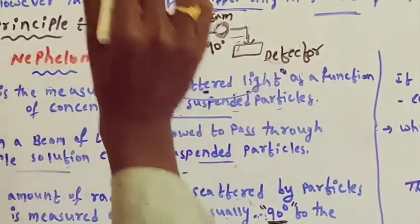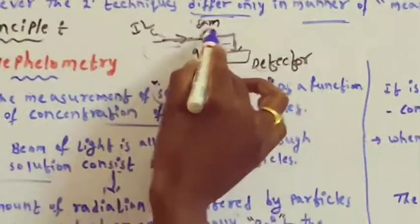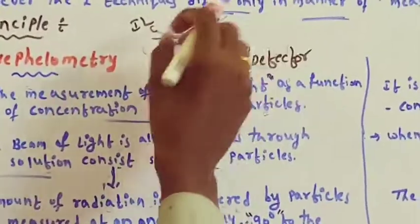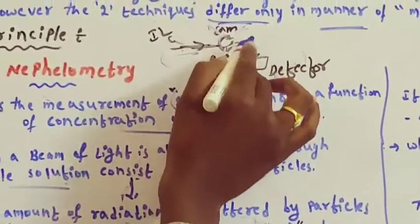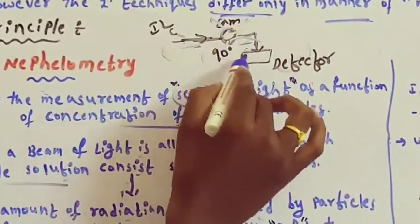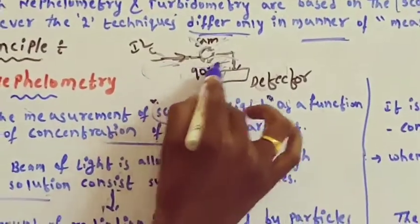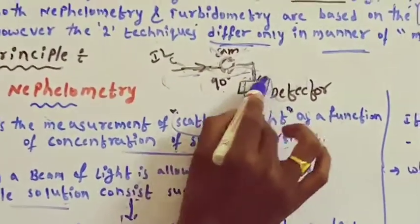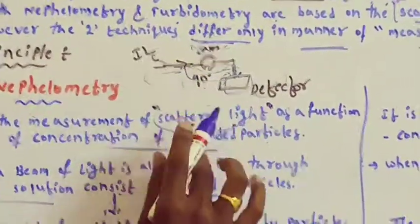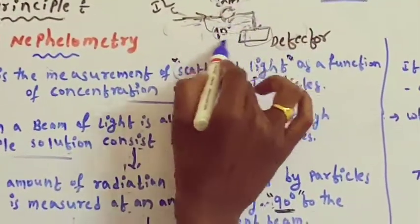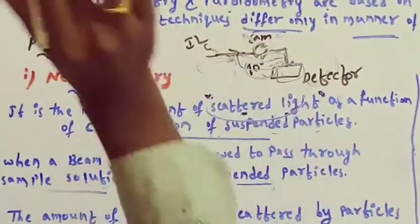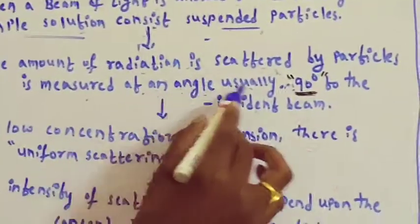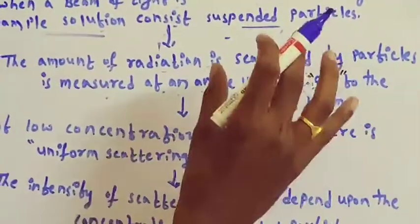The sample solution contains suspended particles. When radiation falls onto the sample cell, the suspended particles scatter the light. In nephelometry, the scattered light measurement takes place at 90 degrees to the incident beam — the detector is placed at 90 degrees to the incident beam. This 90-degree angle is very important.